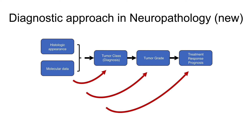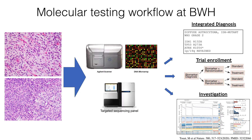Molecular data in and of itself sometimes is able to provide diagnostic information — there are many entities for which a molecular definition exists. Furthermore, molecular information can facilitate tumor grading, and in the age of targeted therapies, many genomic alterations can facilitate targeted treatment approaches irrespective of tumor appearance.